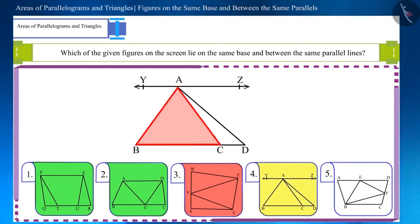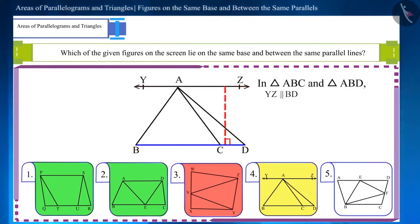Here, triangles ABC and ABD both lie between the two parallel lines BD and YZ. But their bases are different. So, these triangles are of equal height. But they are not on the same base.